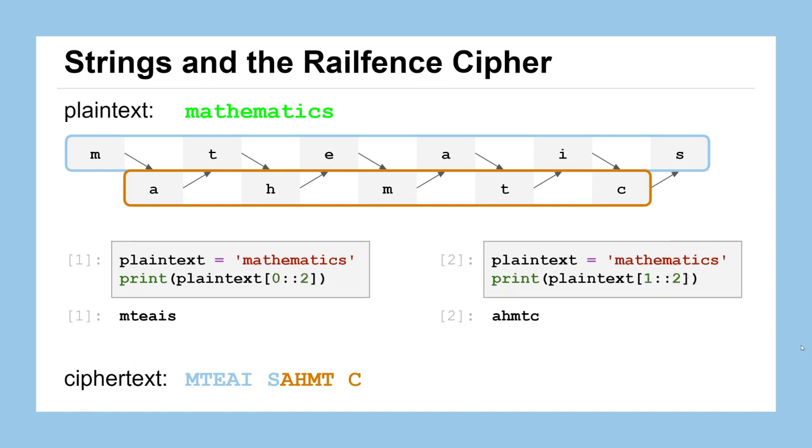For our first group, we could create that grouping of characters by specifying 0 and then a blank and then a 2, meaning start at the string mathematics at index 0, which is M, and then count by 2 to also select the characters that are at index 2, T, 4, E, 6, A, and so on. The second group, we'll do the exact same thing, except we'll just start at index 1. So we'll start at the character A, counting by 2. So the characters at index 1, 3, 5, 7, and so on, which give us the A-H-M-T-C that we're hoping for.